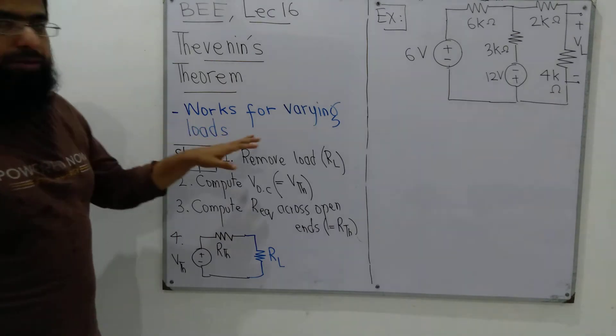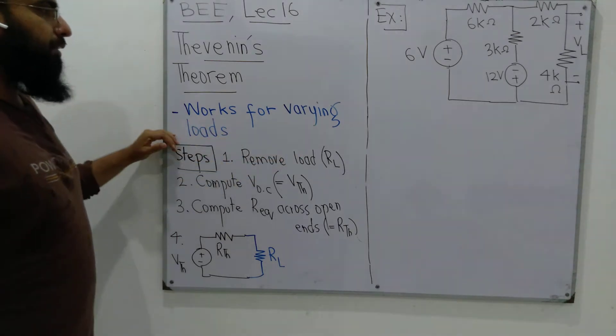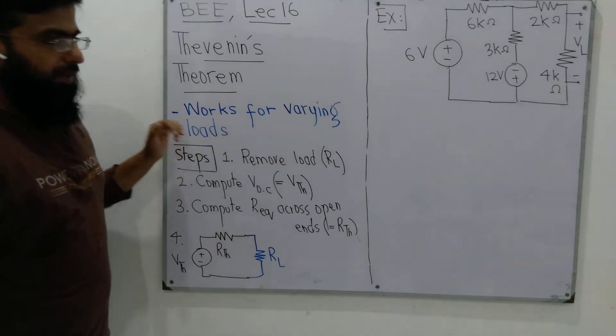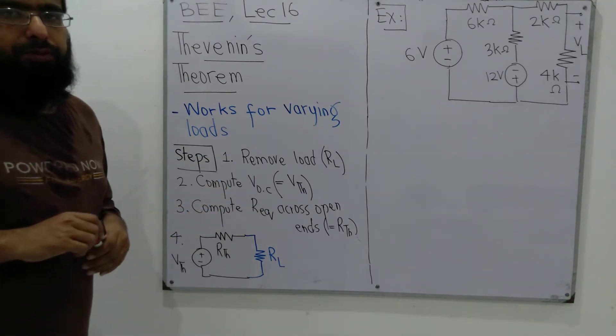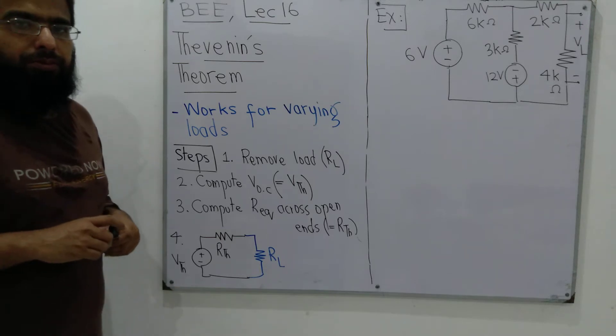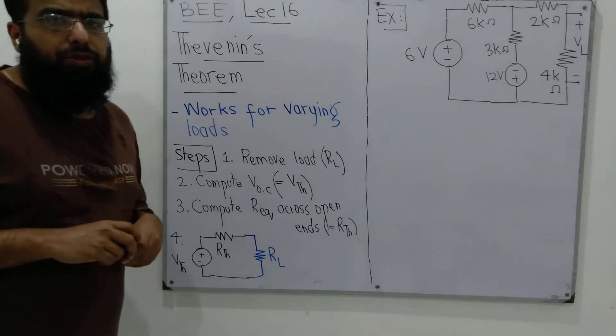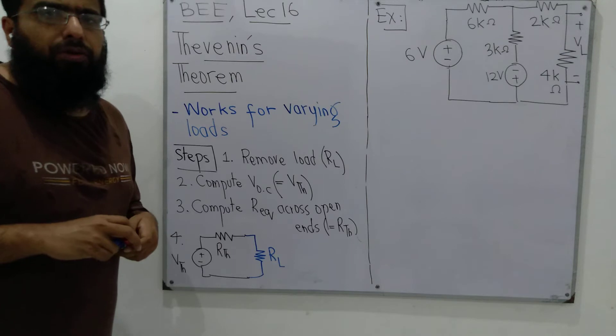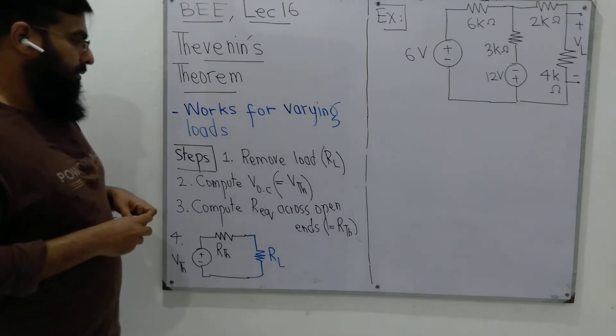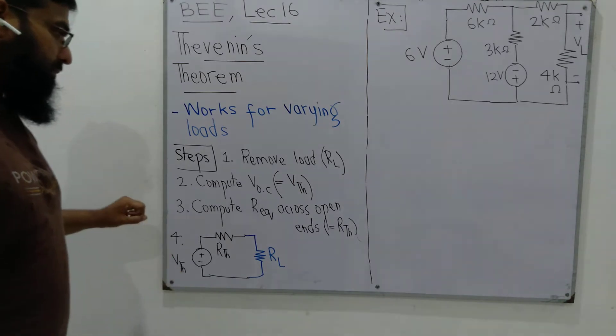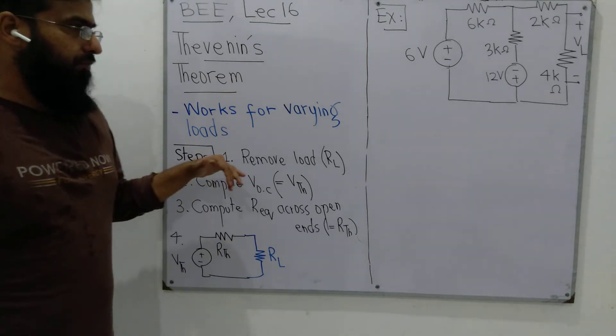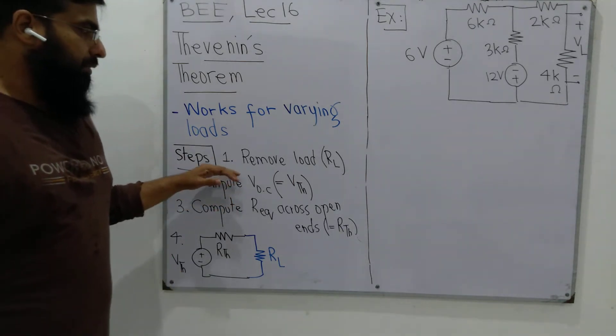It works for situations where we have varying loads. The remaining circuit is the same and we have to try different values of load. Therefore, in addition to the load, we draw an equivalent circuit and we call it Thevenin's equivalent.